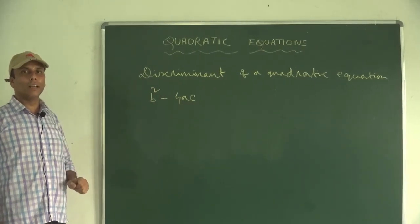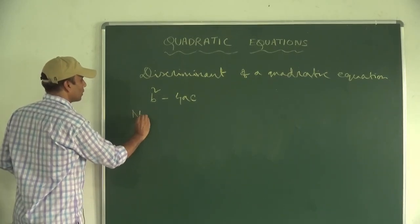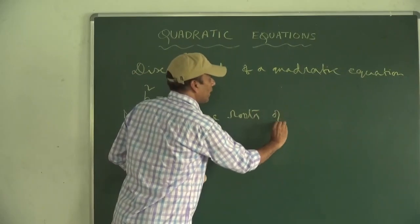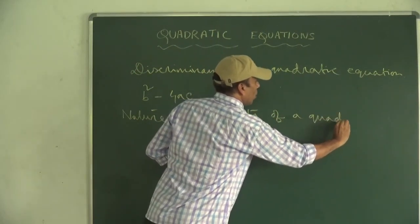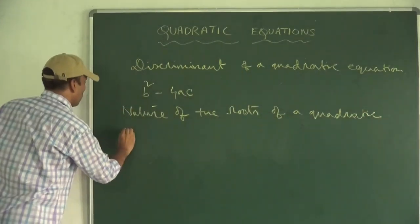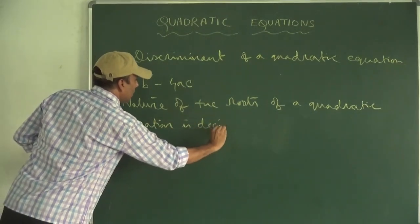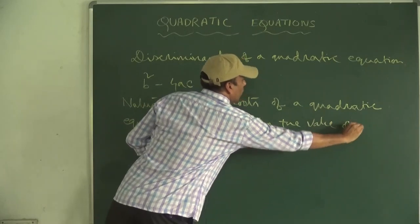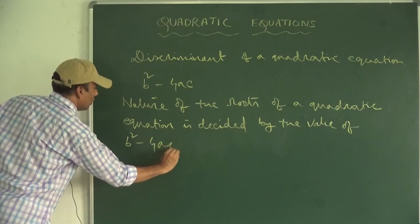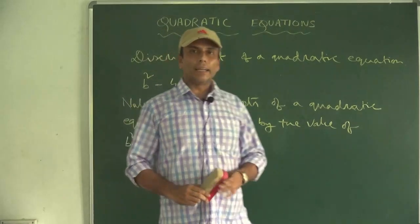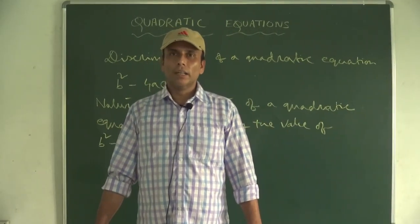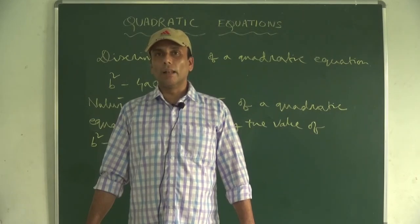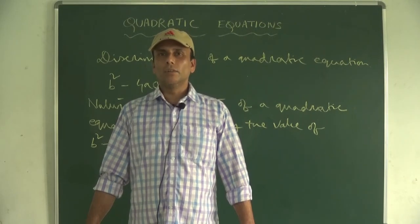The nature of the roots of a quadratic equation is decided by the value of B² - 4AC. If B² - 4AC is greater than 0, then we will get two distinct real roots. If B² - 4AC is equal to 0, we will get two equal real roots. And if B² - 4AC is less than 0, then no real solution.